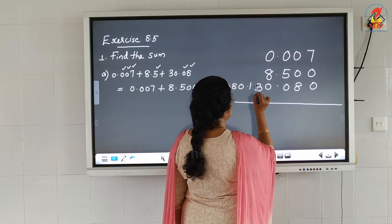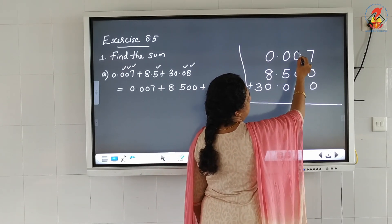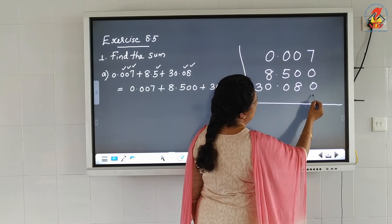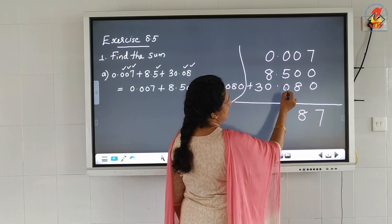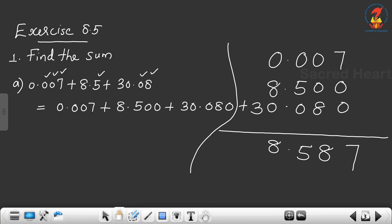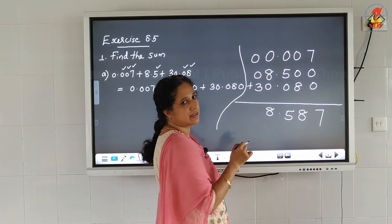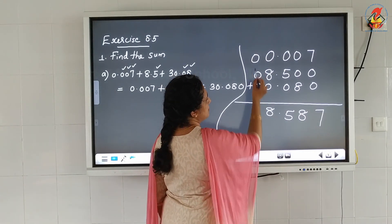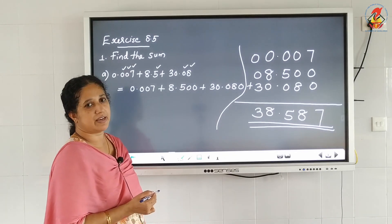Now add starting from the thousandths place: 7 plus 0 plus 0 is 7. Then 0 plus 5 plus 0 is 5. Then the decimal point. Then 0 plus 8 plus 0 is 8. For the tens: no tens in 0.007 or 8.500, so put 0. Then 3 plus 0 plus 0 is 3. The answer is 38.587.